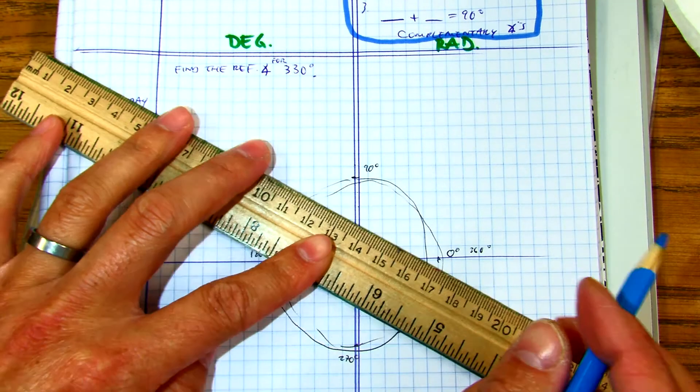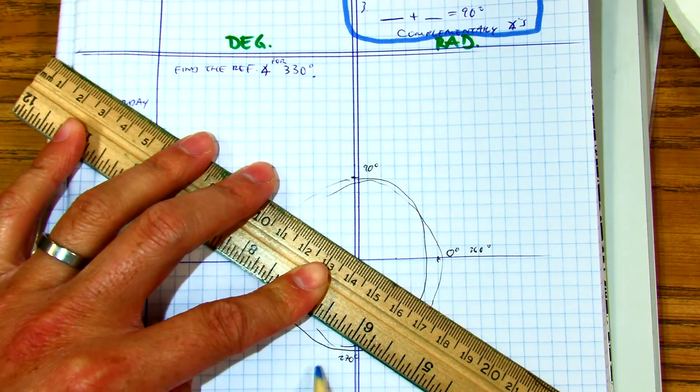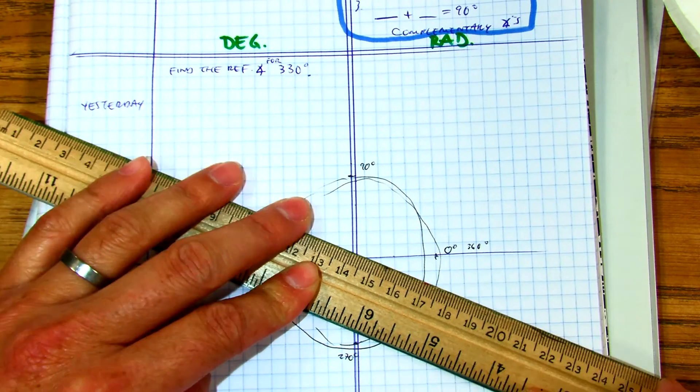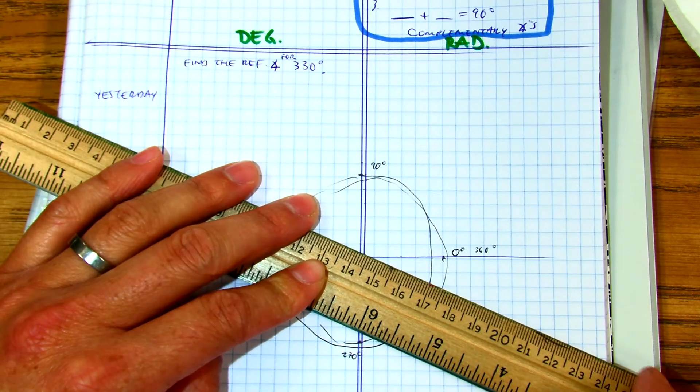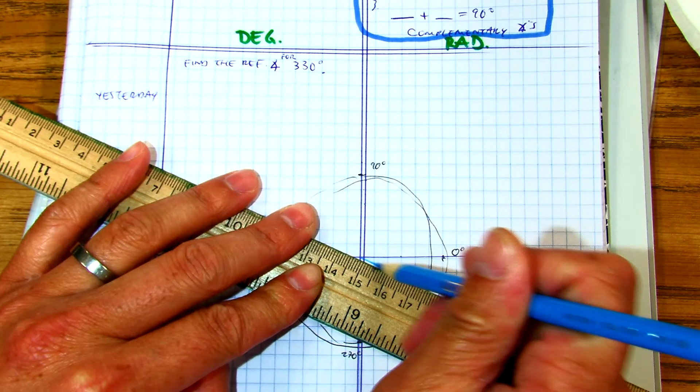Okay, question. Is 330 closer to 360 or 270? Which one? So I'm going to draw it a little bit closer.